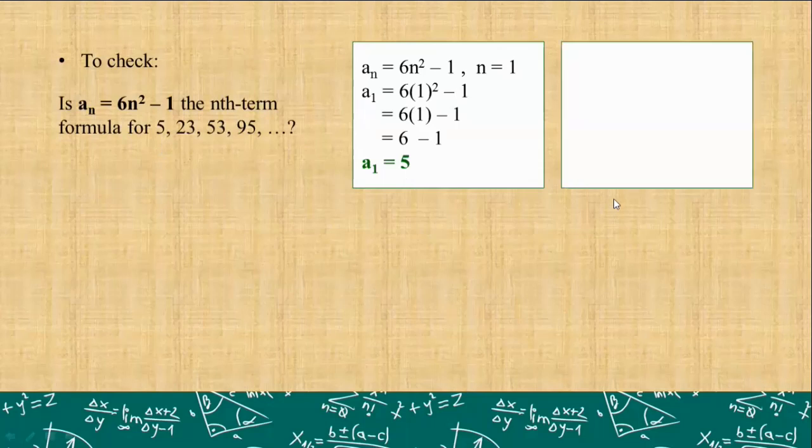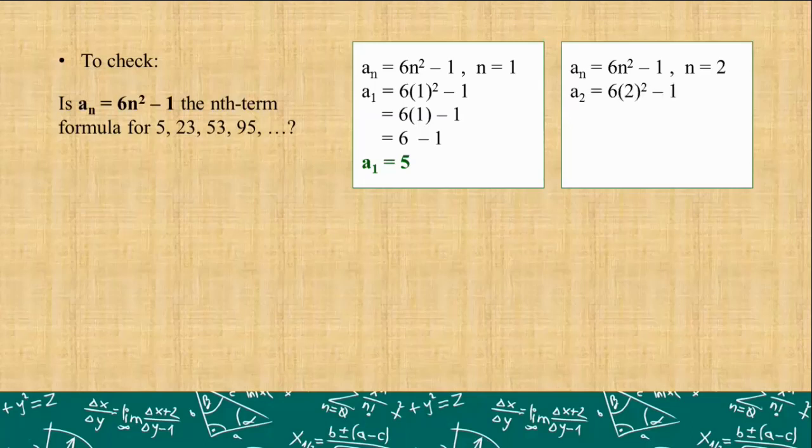For the second term, you may pause this video and try solving. Is it true that 23 will come out from this formula when we substitute 2 for n? Let's see. We have 6 times 2 squared minus 1, but 2 squared is simplified as 4. 4 times 6 is 24. Minus 1, we have 23. It's still the same as the second term.